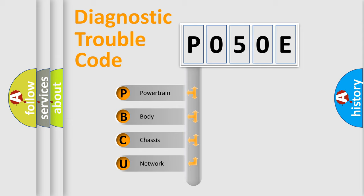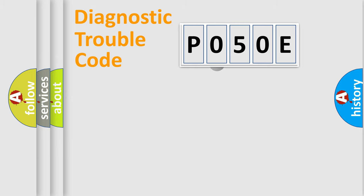We divide the electric system of automobile into four basic units: Powertrain, Body, Chassis, and Network. This distribution is defined in the first character code.